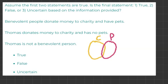As the first statement says, benevolent people donate money to charity and have pets. We're going to draw something in the middle where the two things overlap — this small section which is going to be B for benevolent people.